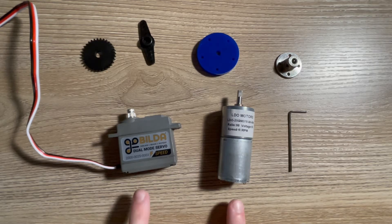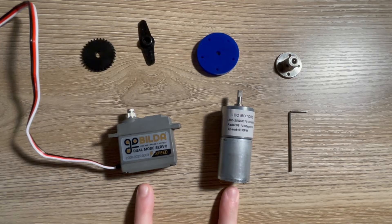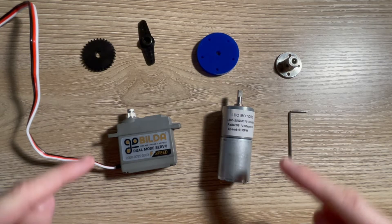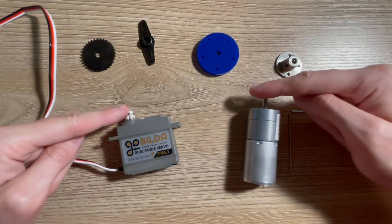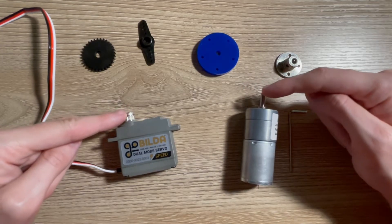First of all, here are two of the most common types of motors. Both have what is called a drive shaft, which is a rod or a part of the motor that rotates.